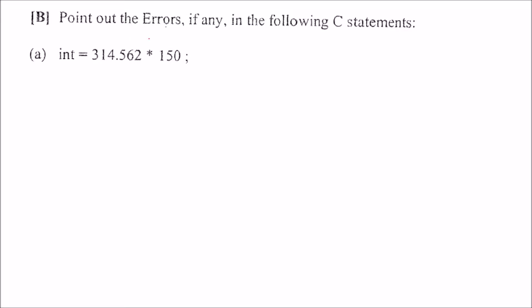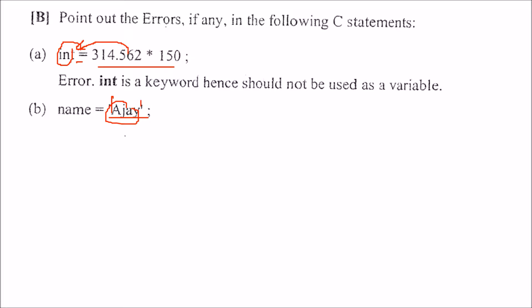Point out the errors. What are the errors? Do we have any errors here? Int is equal to this. Int is a keyword. You cannot assign anything to a keyword. You just have to give some variable name. Name is equal to Ajay. But this is single quotes. So it has to be a character. That can only be one character.